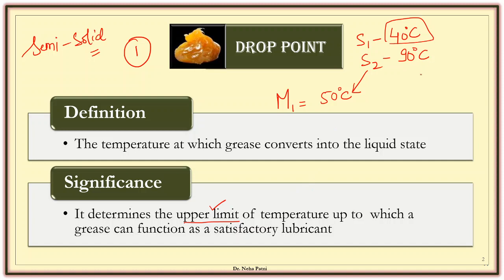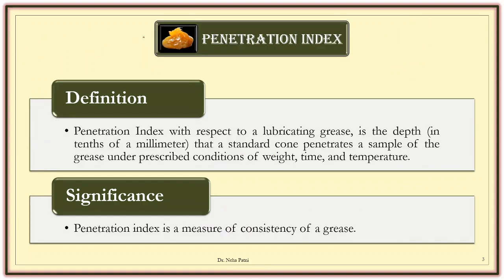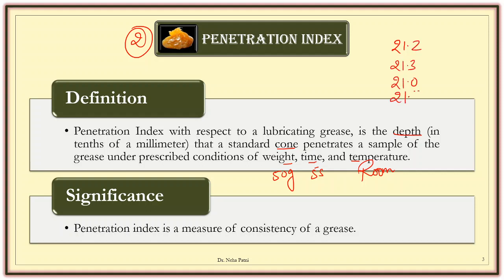So this grease can function up to 40 degrees and this grease can function up to 90 degrees. The second property is penetration index — it is the depth in tenths of a millimeter that a standard cone penetrates the sample of grease under conditions of weight, time, and temperature. We maintain constant weight, take a reading for five seconds at room temperature, and whatever depth is recorded measures the consistency of grease. If the sample shows almost the same readings with around 1mm variation, that sample is good and consistent. If the readings vary haphazardly, the sample is not good. Consistency means that the dispersion of soap and oil is proper — they are properly mixed with no lumps and no separated oil portions.